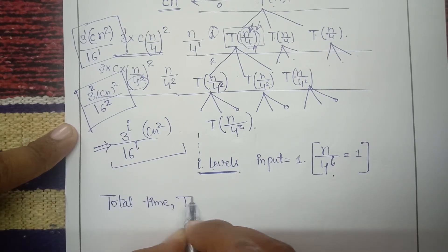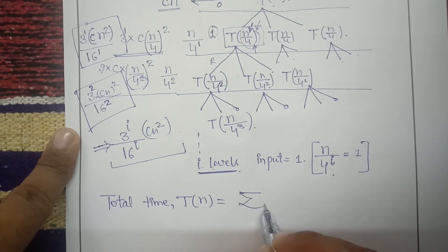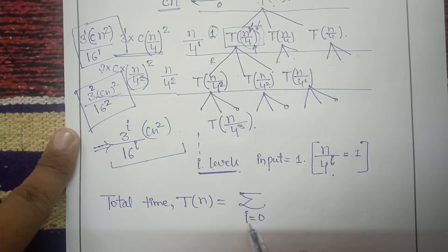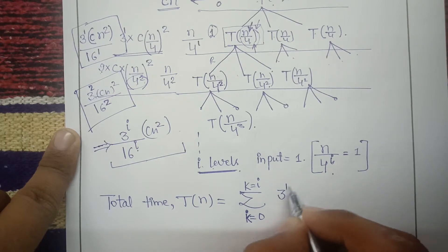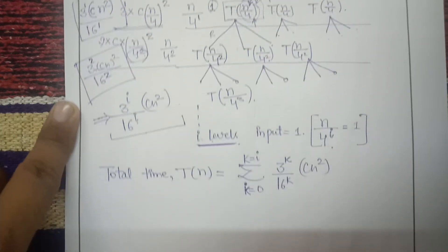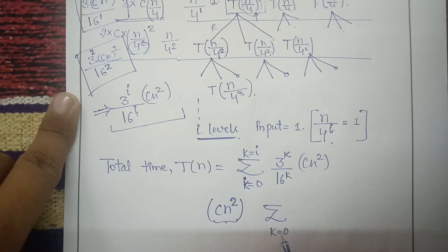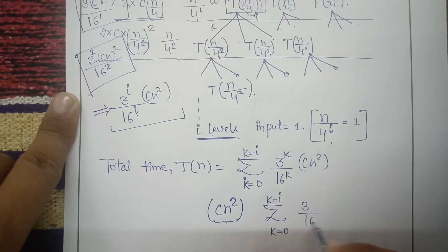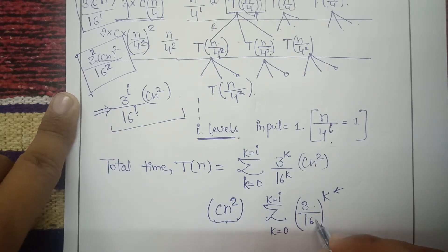The total time T(n) is the sum over all levels: T(n) = cn² × Σ(k=0 to i) of (3/16)^k. Taking cn² as a common constant factor, we have cn² times the geometric series Σ(k=0 to i) (3/16)^k. As k increases, (3/16)^k decreases.